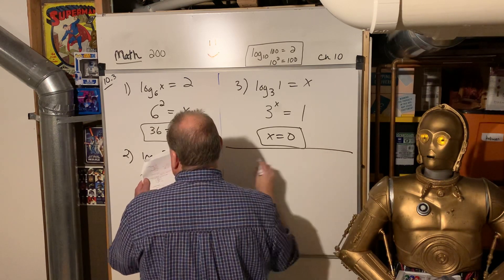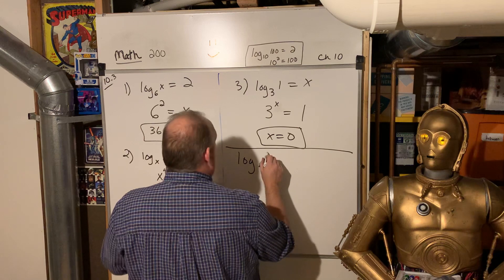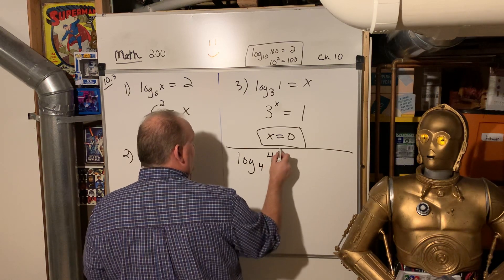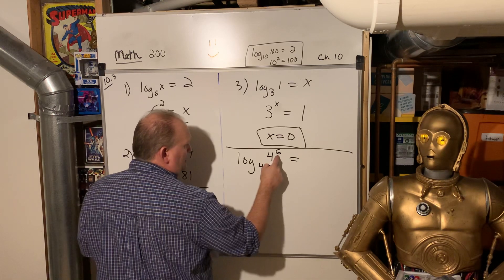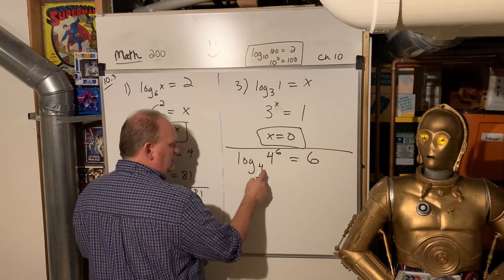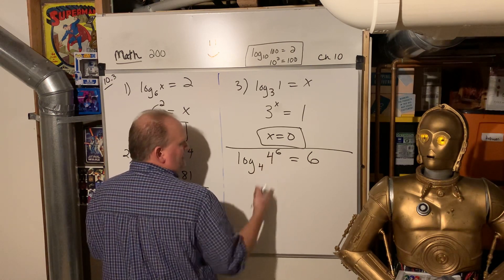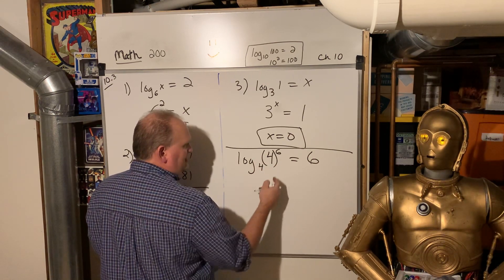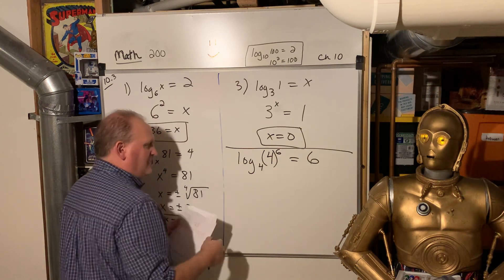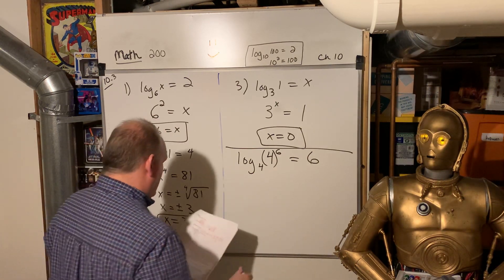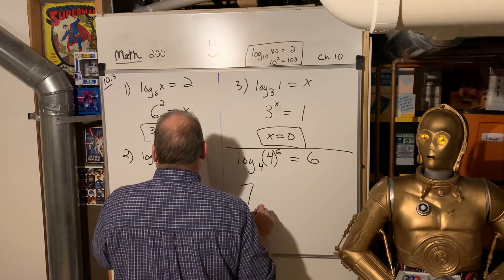Then they have some special cases. If I have log base four of a number and then that number has a power on it, it ends up just being the power. It's just six. Like think about it. It's asking four to what power gives me four to the sixth power? Well, that's six. You know, they, they kind of gave the answer right there in the question. This one is just weird. So if I have log, seven to the log base seven of negative three, there should be parentheses there. You should add parentheses to that, add parentheses to that.